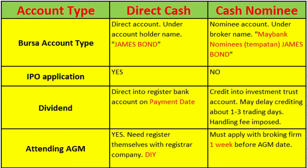In terms of the Bursa account type, the direct account will be registered directly under the investor's name, which is James Bond. For the cash nominee, it will be under the broker's name — Maybank Equity, followed by the nominee designation and the investor's name, James Bond.